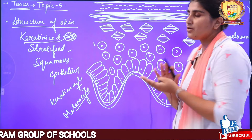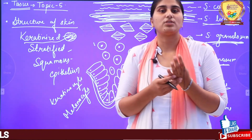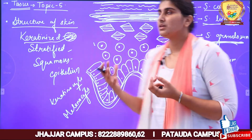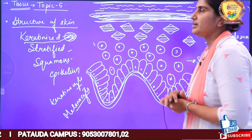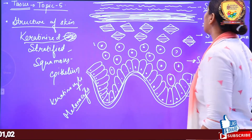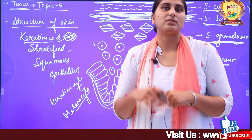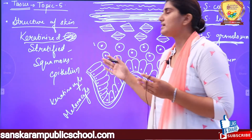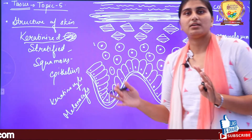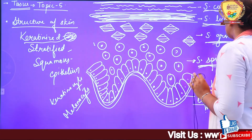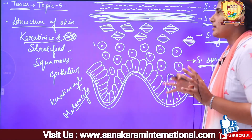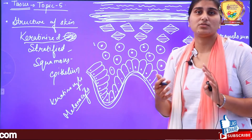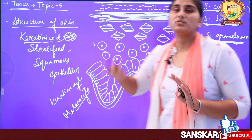Just above granulosum is stratum lucidum. This layer is found only in the hands and soles and provides hardness. If you touch the skin on your palm versus other body parts, there will be a considerable difference — the palm is a bit harder because of this extra layer called stratum lucidum. And the topmost layer is stratum corneum, which contains dead cells that are continuously being removed.